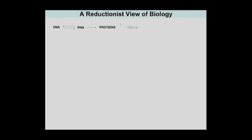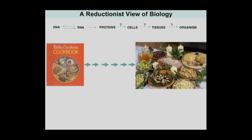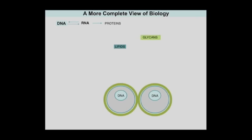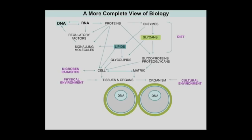There is this reductionist view of biology that DNA makes RNA makes protein, and there's a tendency to think that cells, tissues, and organisms emanate from this simple paradigm. But that's like saying that if you have Betty Crocker's cookbook, you have a meal — a lot of other things happen along the way. A more complete view of biology would include lipids, glycans, glycoproteins, glycolipids, cells, matrices, tissues, and organisms, with feedback to DNA and RNA, plus microbes and parasites, the physical environment, diet, and for species like humans, the cultural environment.